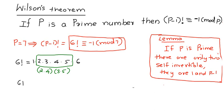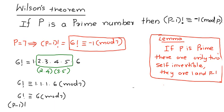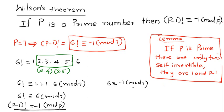So 6! is congruent to 1 × 1 × 1 × 6 modulo 7, which gives 6! ≡ 6 (mod 7). Since p minus 1 factorial is congruent to 6, and 6 ≡ -1 (mod 7), we have p minus 1 factorial ≡ -1 (mod p) for the case p = 7.